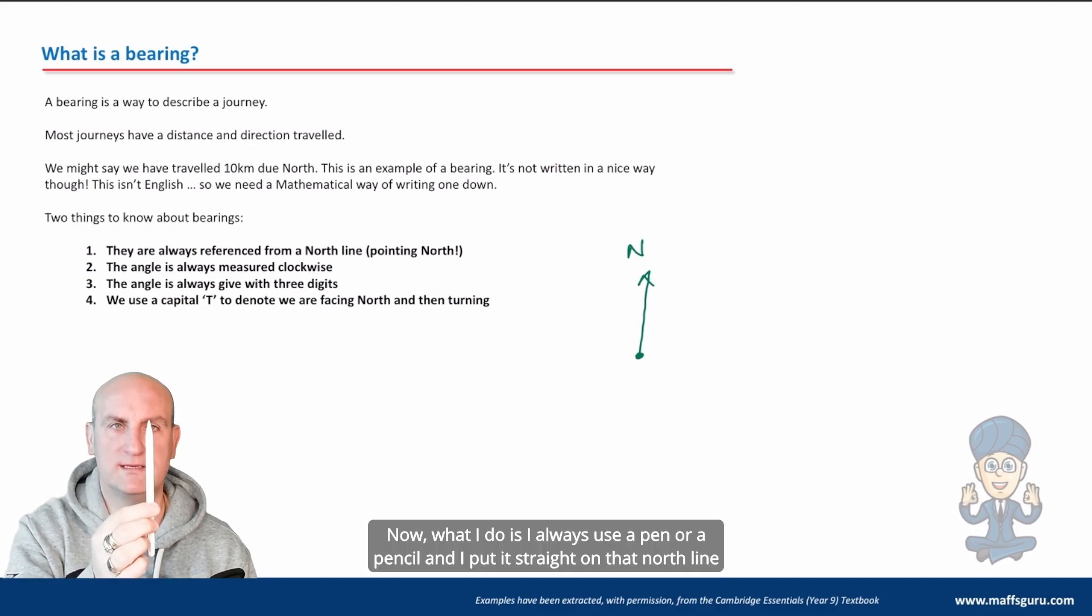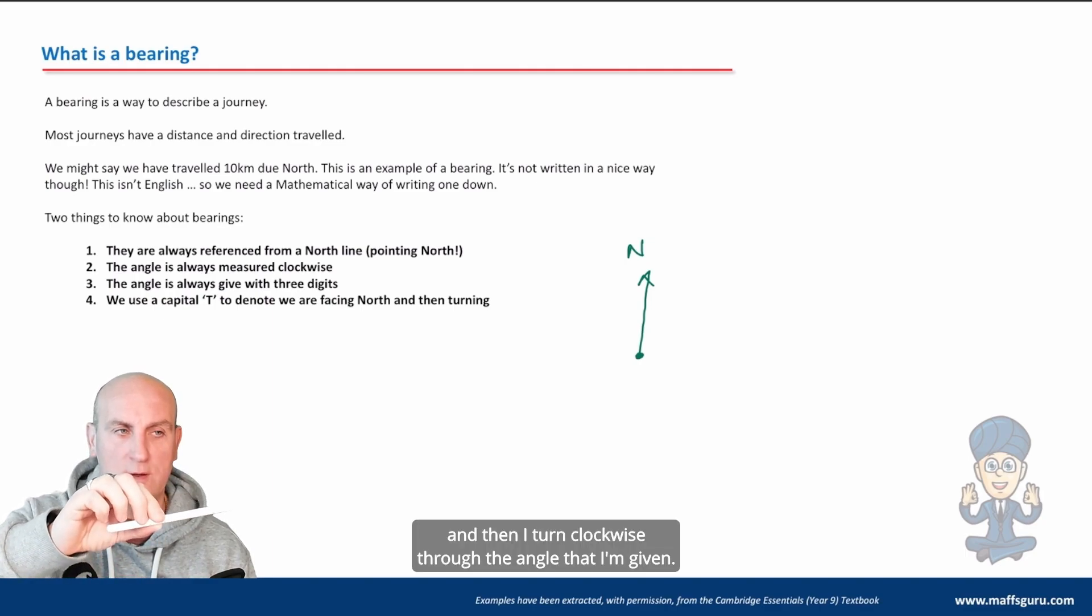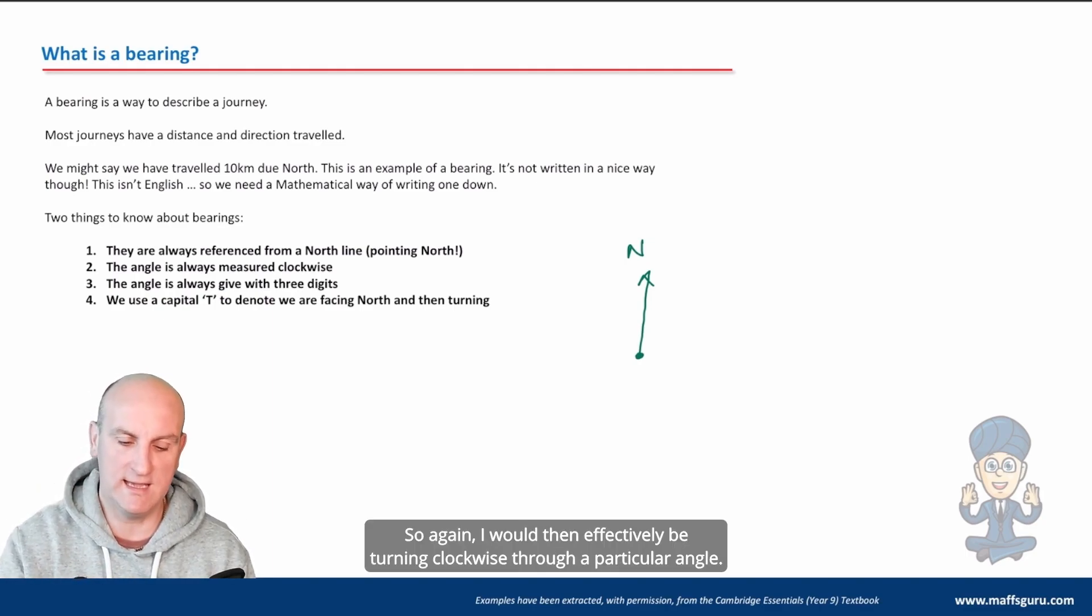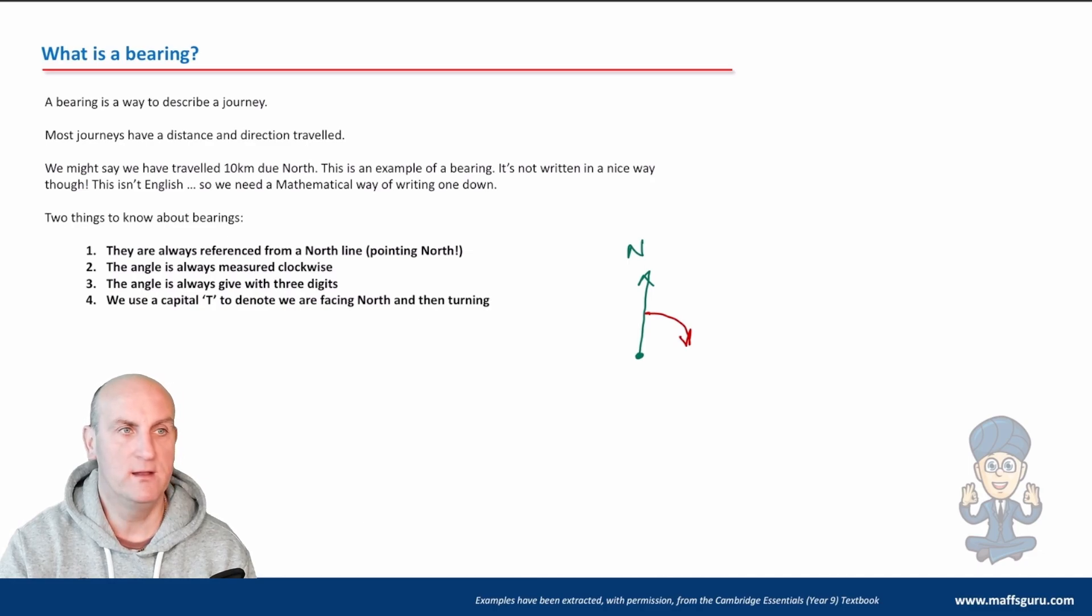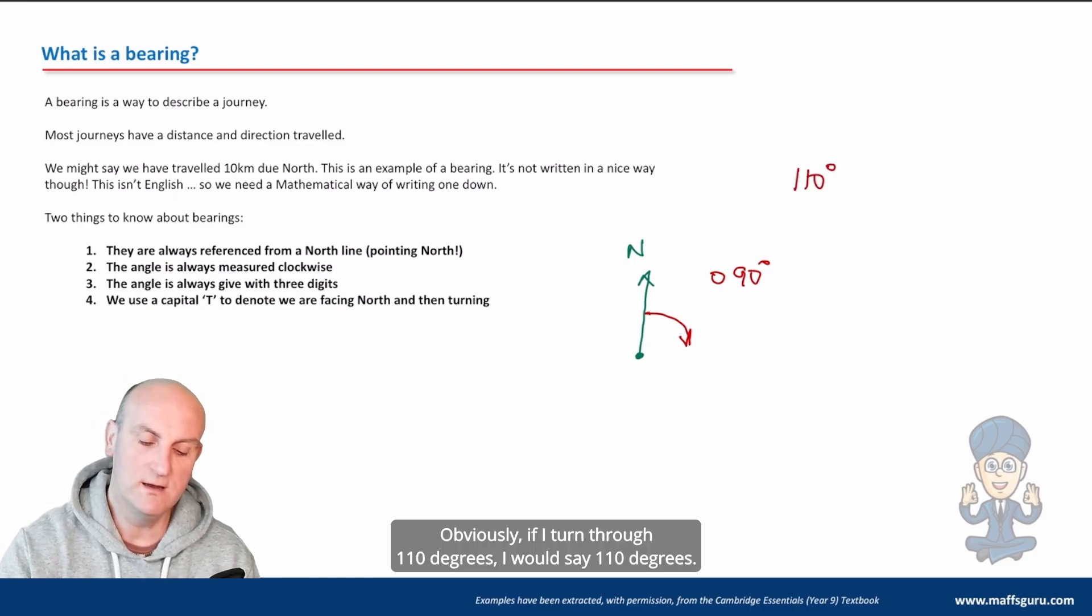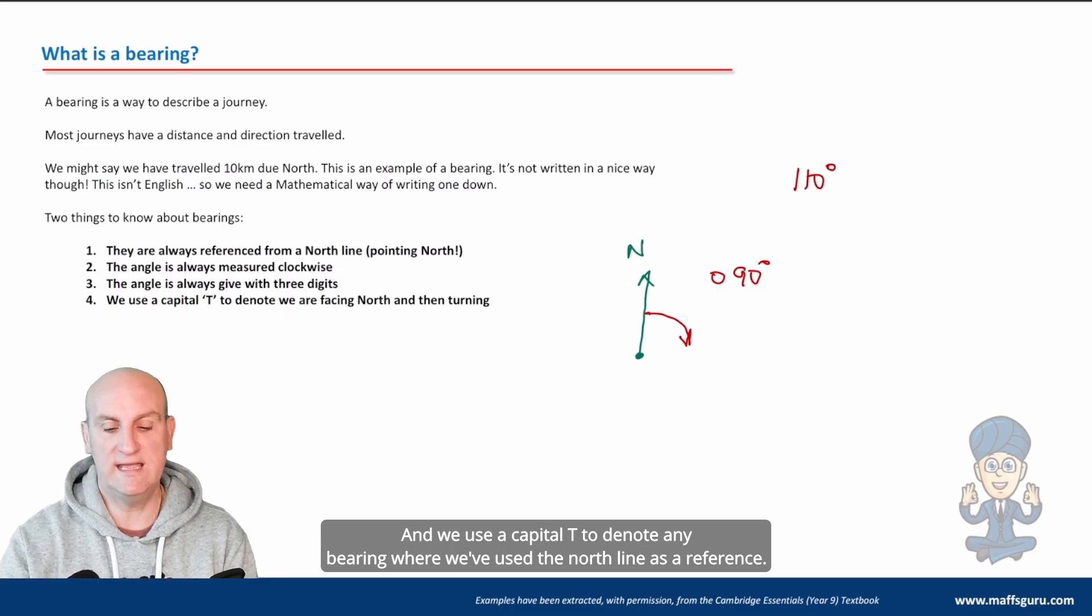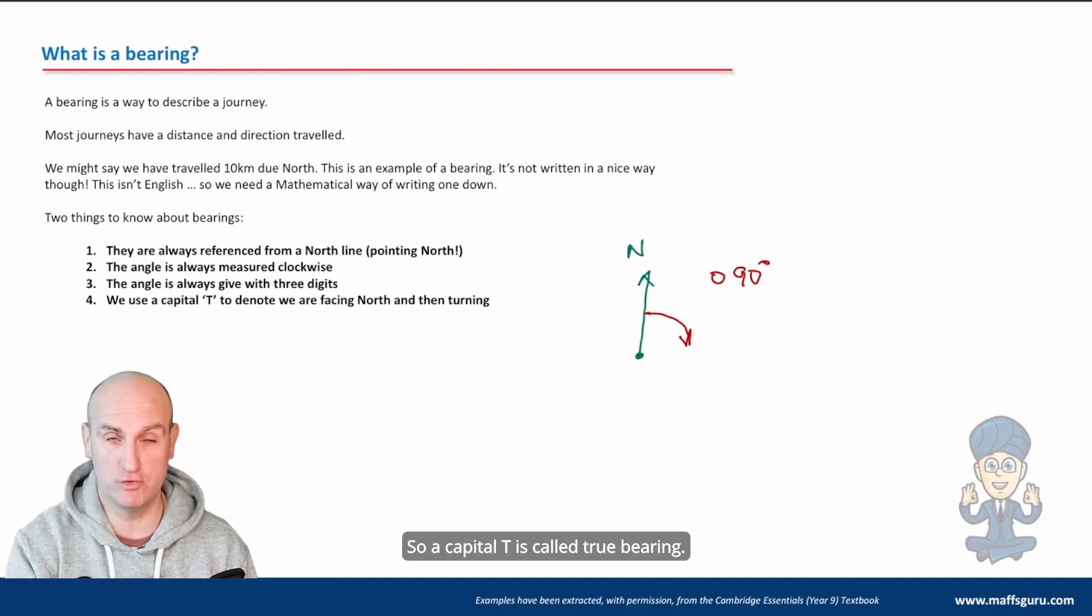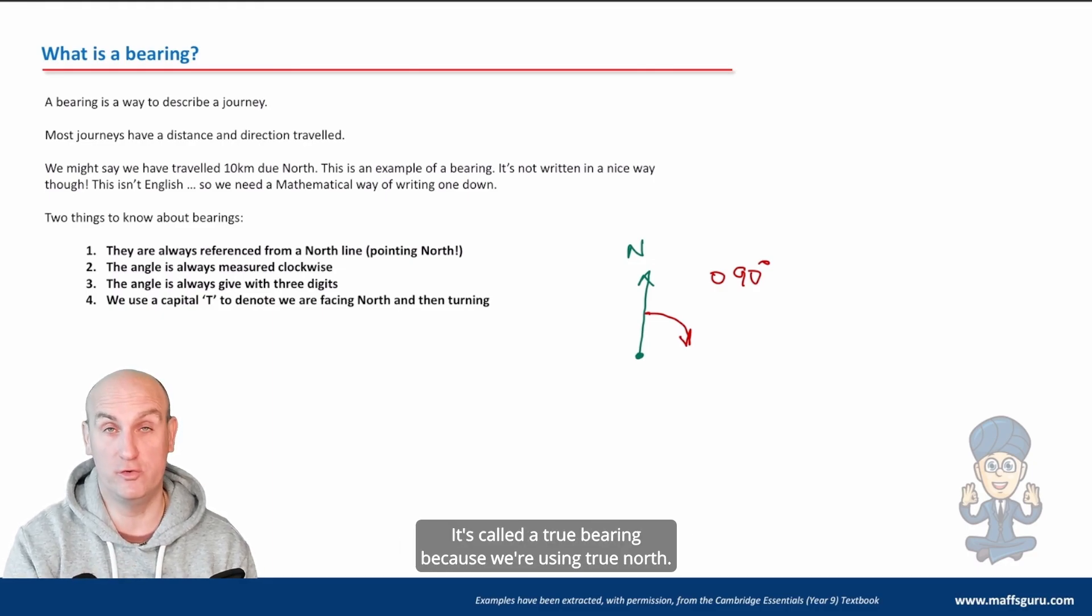And I would draw a north line. Now, the reason we do this is because then we're going to turn an angle. And then we turn an angle by going clockwise. Now, what I do is I always use a pen or a pencil and I put it straight on that north line. And then I turn clockwise through the angle that I'm given. So again, I would then effectively be turning clockwise through a particular angle. The angle is always given to three digits. So I wouldn't say it's 90 degrees. I'm not saying I'm going to turn through 90 degrees. I would turn through 090 degrees. Obviously, if I turn through 110 degrees, I would say 110 degrees.